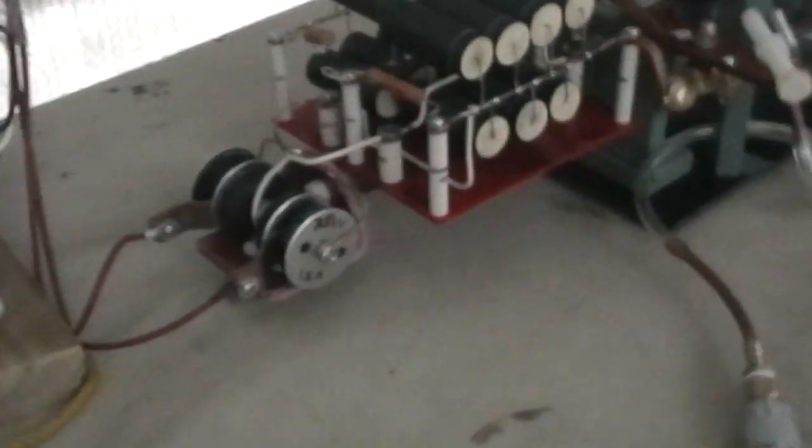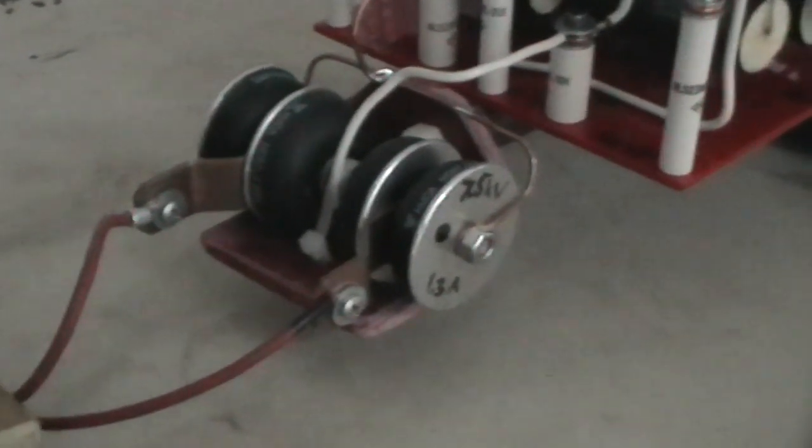The primary supply is the microwave oven transformer that goes into a full wave bridge made up of these diodes.